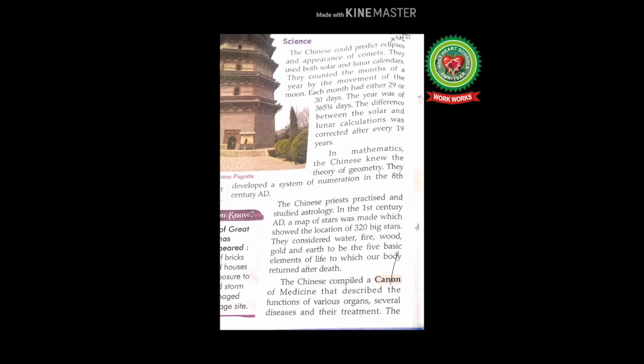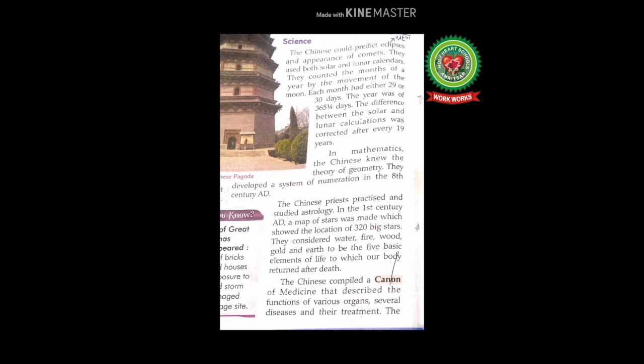The Chinese considered water, fire, wood, gold, and earth to be the five basic elements of life, to which our body returned after death. Astrology is the study of stars, moon, sun, and planets. The Chinese believed that our body is made from these five basic elements and we have to return them after death.